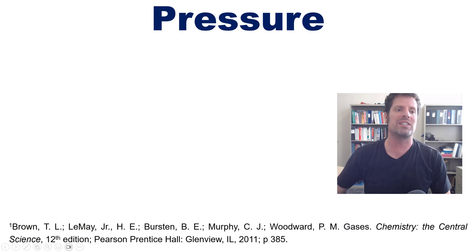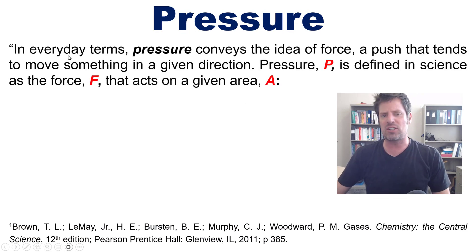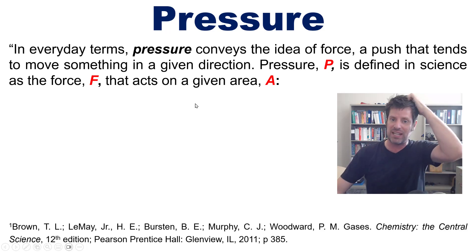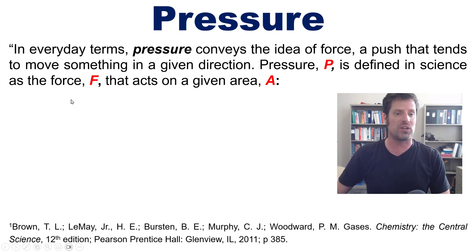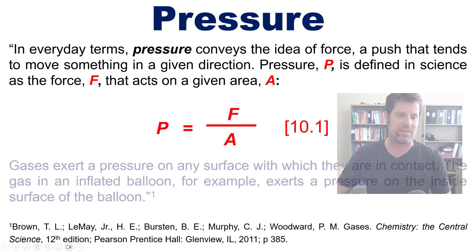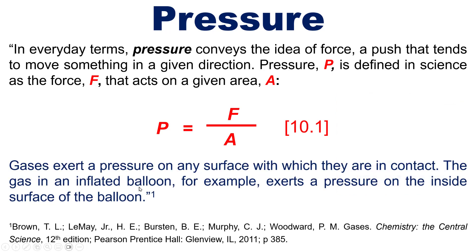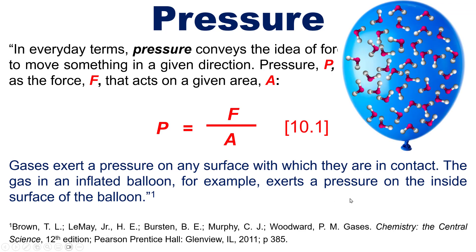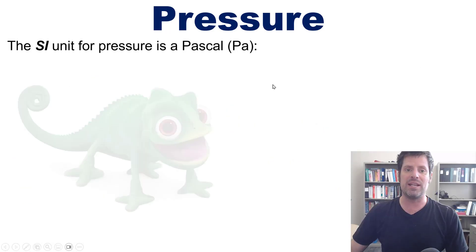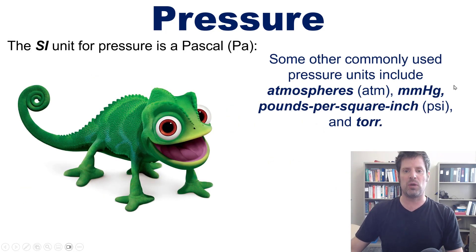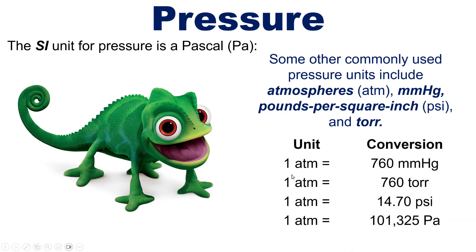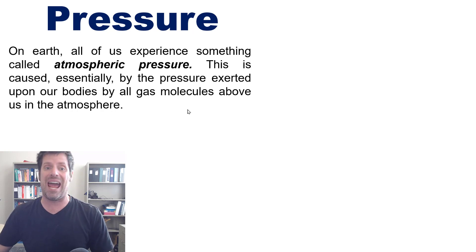Now I move on to pressure. According to our textbook, in everyday terms pressure conveys the idea of force — a push that tends to move something in a given direction. Pressure P is defined in science as the force F that acts upon a given area A. Gases exert a pressure on any surface with which they are in contact — the gas in an inflated balloon, for example, exerts pressure on the inside surface. The SI unit for pressure is the pascal. Other commonly used units include atmospheres, millimeters of mercury, pounds per square inch, and torr. One atmosphere equals 760 mmHg and 760 torr, meaning one torr equals one millimeter of mercury.